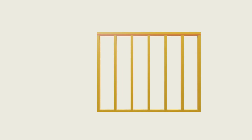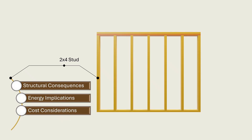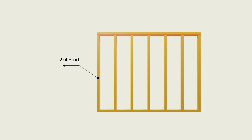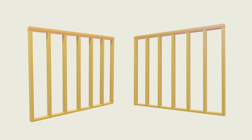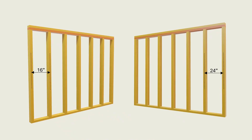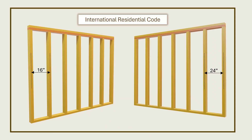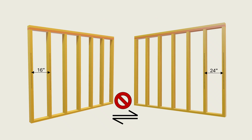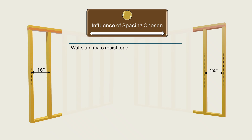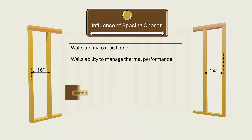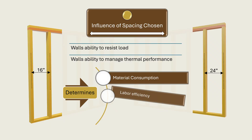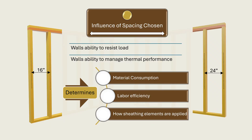Despite its ubiquity, the way we deploy 2x4 studs is far from arbitrary. Every stud layout carries structural consequences, energy implications, cost considerations, and practical trade-offs that echo throughout the entire building. Among the most significant decisions framers and designers face is the choice between spacing studs at 16 inches on center or 24 inches on center. The spacing you choose influences the wall's ability to resist load and manage thermal performance, determines material consumption, labor efficiency, and even how sheathing elements like plywood and OSB will land on the frame.